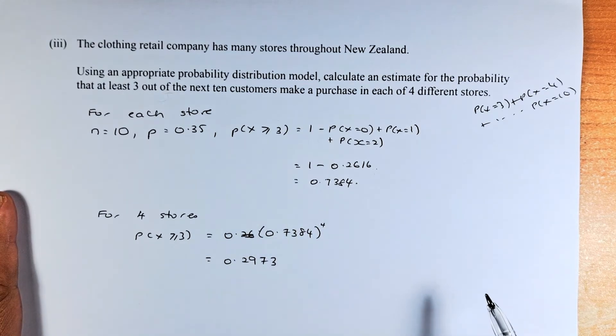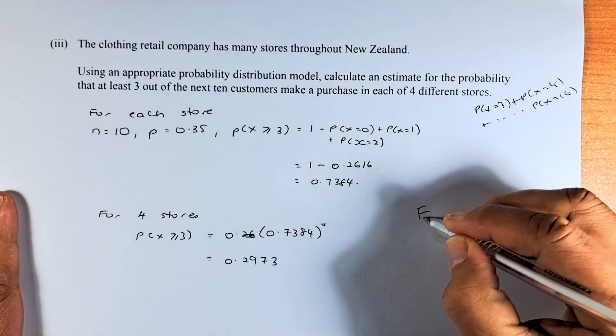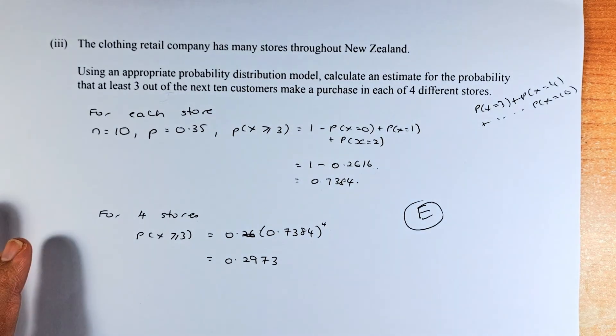For the 4 stores, we need to take 0.7384, multiply them 4 times, or to the power of 4. And the answer is 0.2973. And that is an excellence. Great.